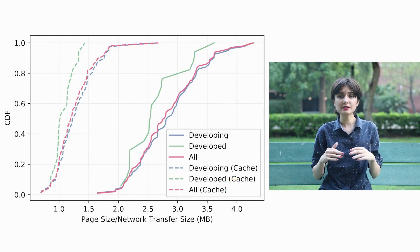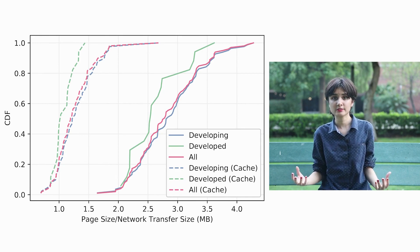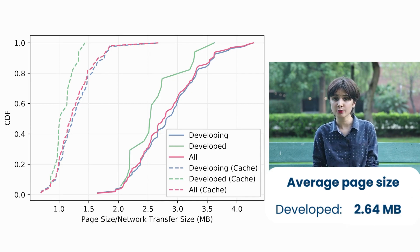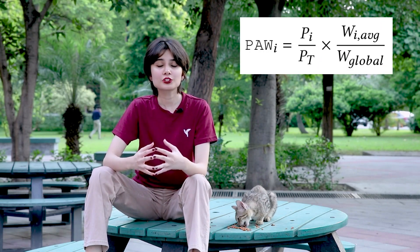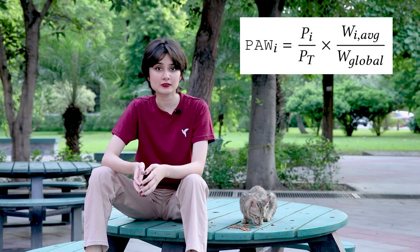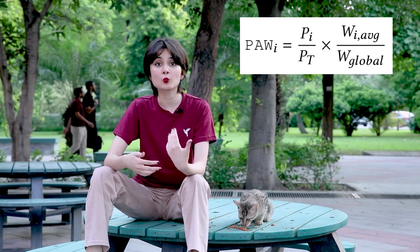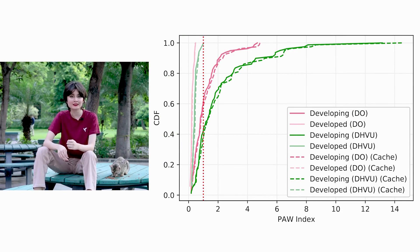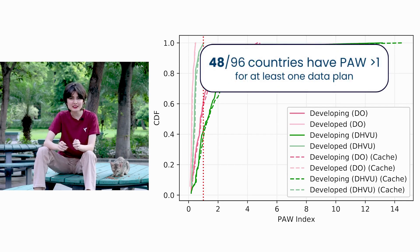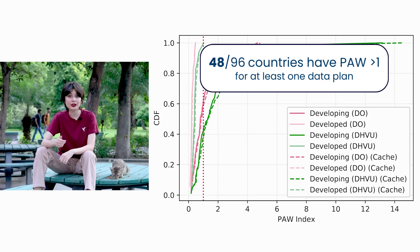As for web complexity, we see discrepancies arise between developed and developing regions. In developed regions, the average page size is 2.64 MB, while in developing regions it's larger at 2.87 MB. To quantify affordability, we propose a novel fairness metric, the PAW Index, which considers both web page sizes and broadband prices. It essentially tells us the reduction required in average page size in a region to equalize web accesses around the world. A PAW of greater than 1 indicates unaffordable accesses. As you can observe in this graph, with the red dotted line indicating a PAW of 1, a lot of developing countries have unaffordable accesses. Specifically, 48 out of 96 countries in our dataset have a PAW of greater than 1 for at least one data plan.